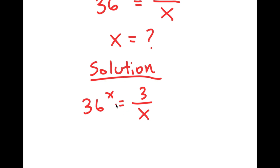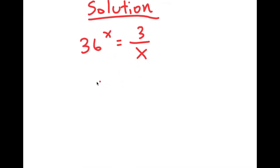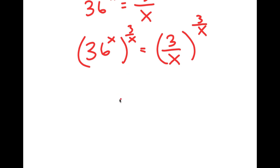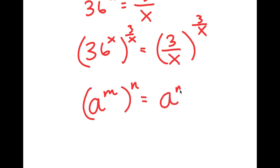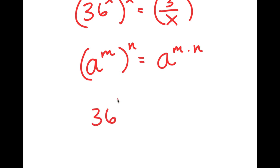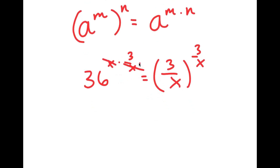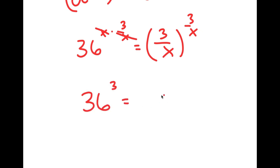What I'm first going to do is take the power of 3 over x on both sides. So now I have 36 to the power of x, to the power of 3 over x, is equal to 3 over x, to the power of 3 over x. Now, if I have something in the form a to the power of m to the power of n, this is equal to a to the power of m times n. So 36 to the power of x to the power of 3 over x equals 36 to the power of x times 3 over x. These two x's cancel out, and I get 36 to the power of 3 is equal to 3 over x to the power of 3 over x.